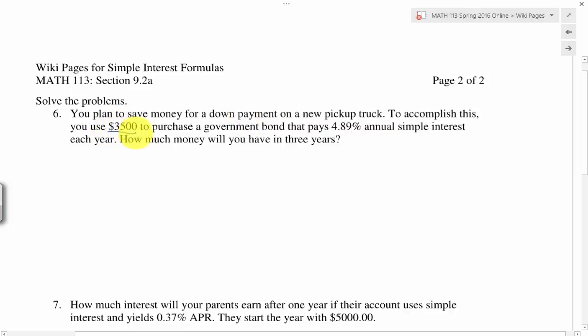The first thing that jumps out is this $3,500. You use that money to buy a bond, and then that tells me that that's going to be my starting or present value. And then the interest is 4.89%. That's telling me my rate is going to be 0.0489.